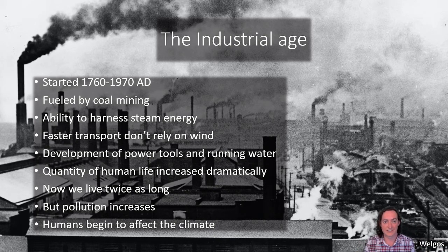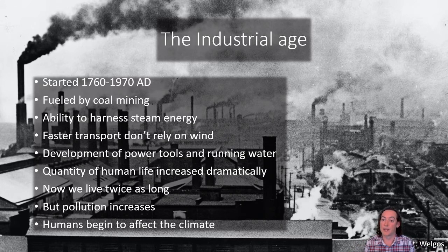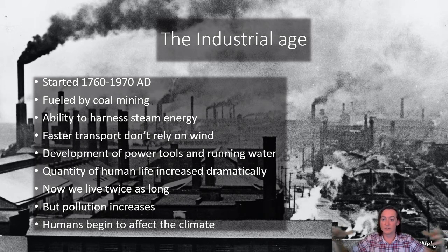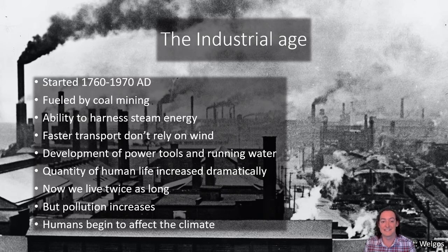The Industrial Age was around the 1700s and ended in the 1970s, fueled by our ability to use coal. Coal is combustible — we burned it to heat water to produce steam, which allowed us to develop the steam engine. Suddenly we didn't have to rely on wind for transport around the globe, and we could build trains for land travel, bringing the world together and interconnecting it in brand new ways. We developed power tools to build things faster and more efficiently, and there were dramatic increases in life expectancy — we now live twice as long as we did before the Industrial Age.